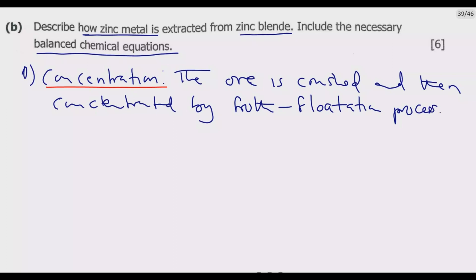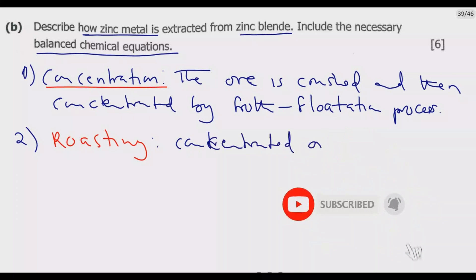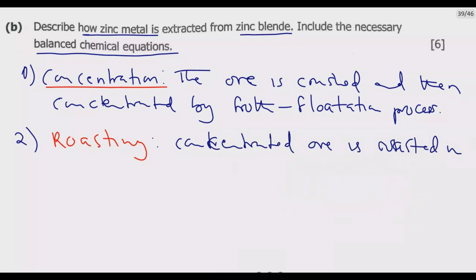Step two is roasting. Under step two, the concentrated ore is then roasted in the presence of excess air at about 1200 Kelvin to obtain zinc oxide. The concentrated ore is roasted in the blast furnace in the presence of air.